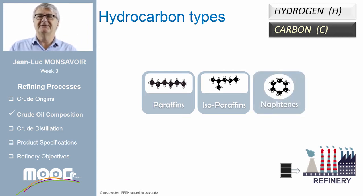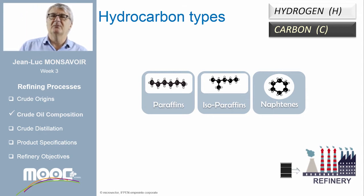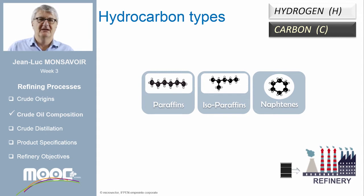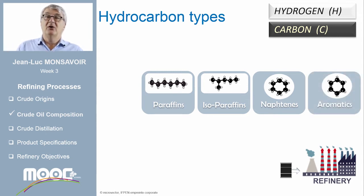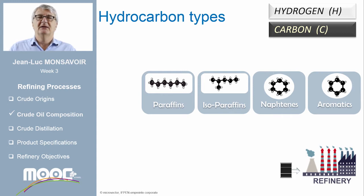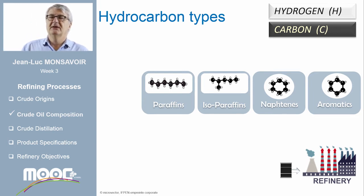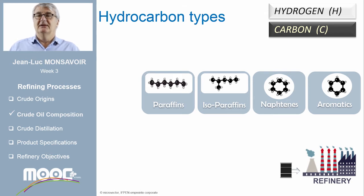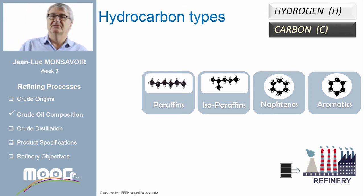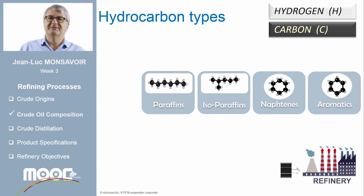The third type of hydrocarbons is the naphthene family. These hydrocarbons are composed of carbon and hydrogen linked together in a ring shape. The last family is aromatic compounds. Aromatics are hydrocarbons composed of rings of carbon and hydrogen but with double bonds between the carbon elements. Compared to naphthenes, aromatics have less hydrogen for the same number of carbons. The first aromatic is called benzene, with six carbon atoms — an important compound for the petrochemical and chemical industries. The crude oil is characterized by its paraffin, isoparaffin, naphthene and aromatic content, which directly influences the quality of the products obtained.